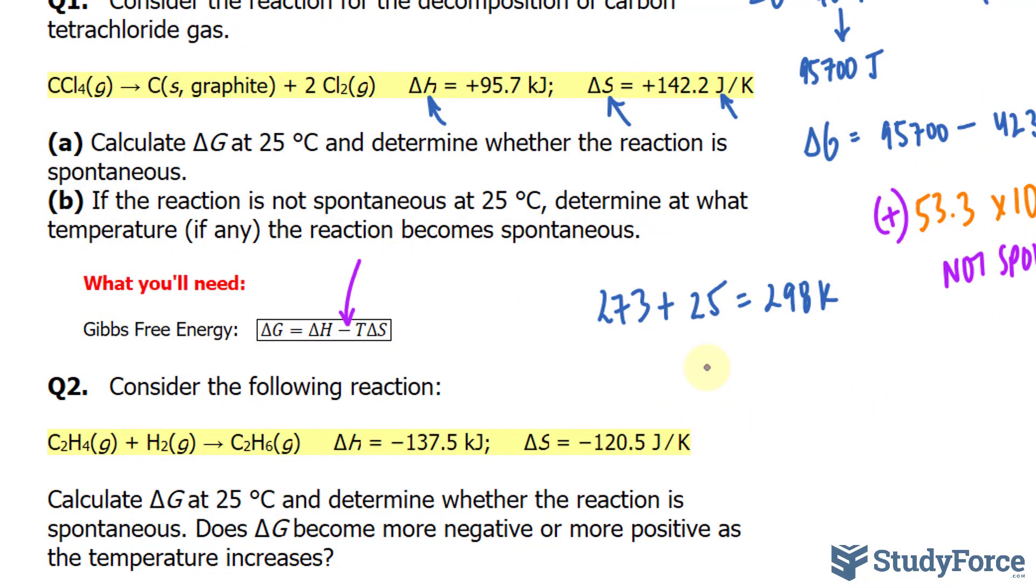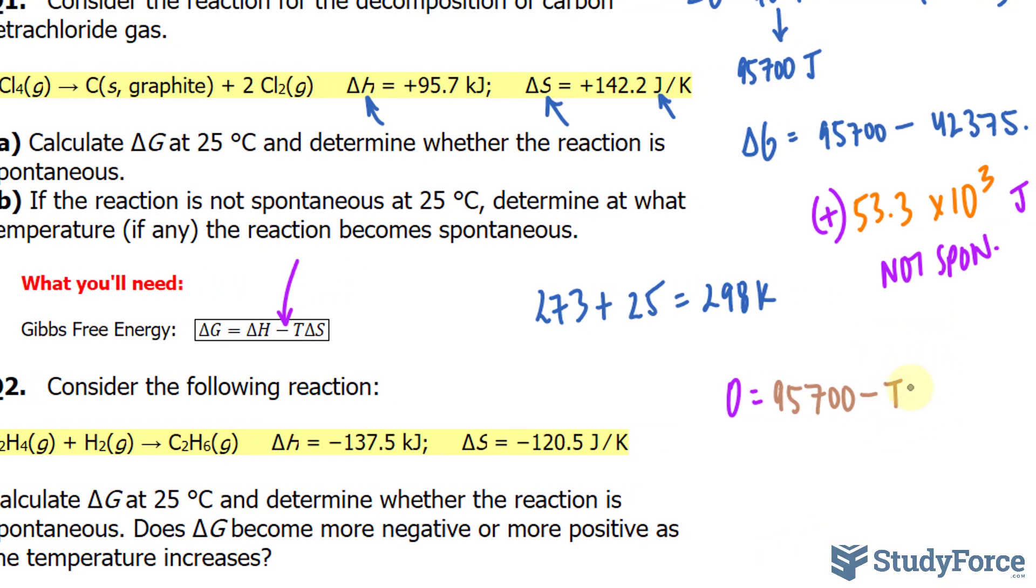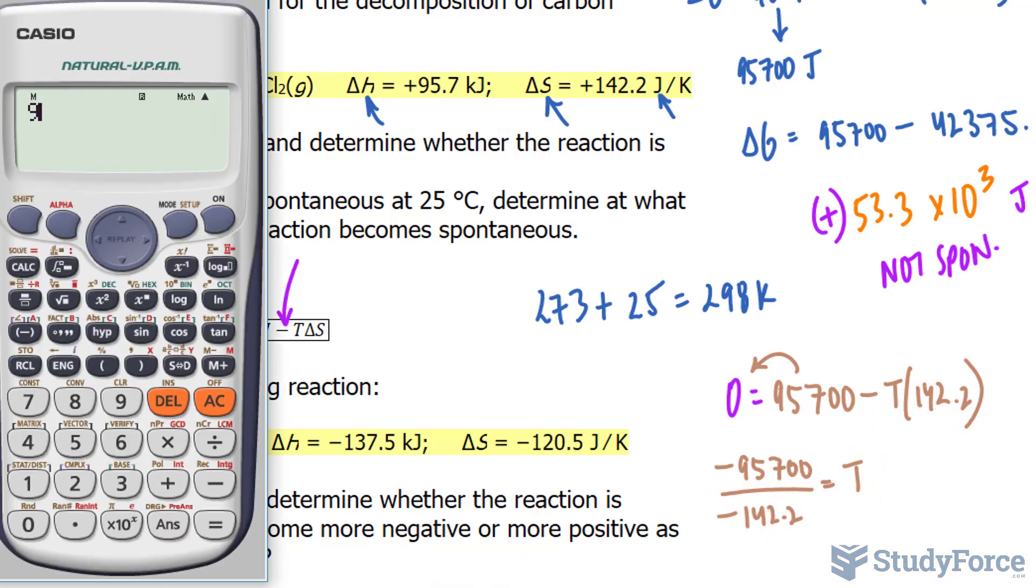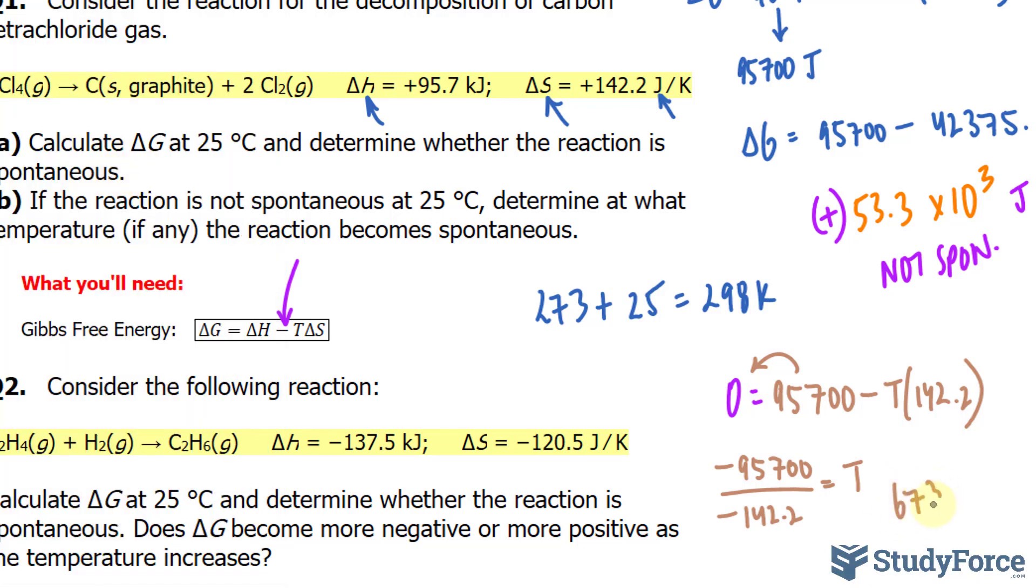In case that's confusing, I'm going to set delta G equal to 0 is equal to 95,700 minus T, notice that we've left T blank, multiplied to 142.2. Let's solve for T. I'll bring this number over, negative 95,700, and then divide both sides by 142.2, is equal to, and that should be negative, T. 95,700, divided by 142.2. The negatives would cancel out anyway, that's why I'm not including them. We get, to three significant figures, 672, or 673, 673 Kelvin.